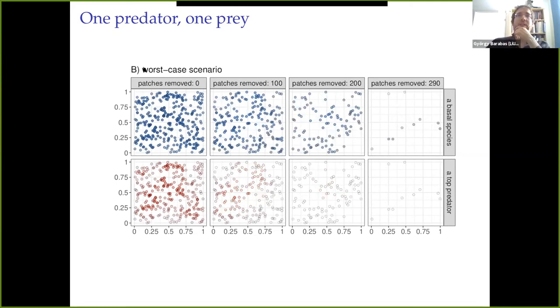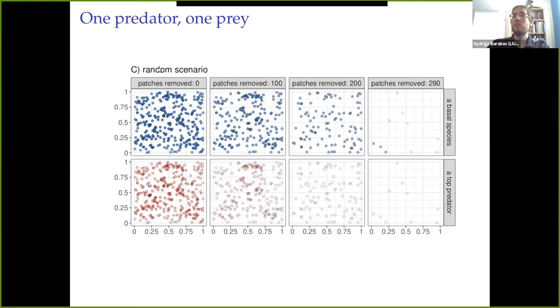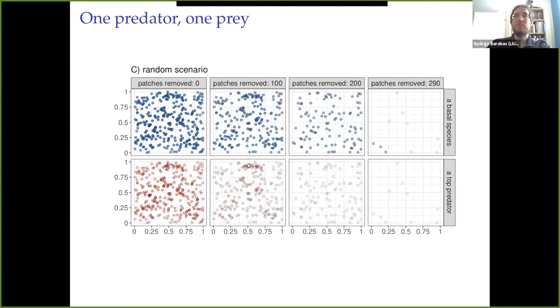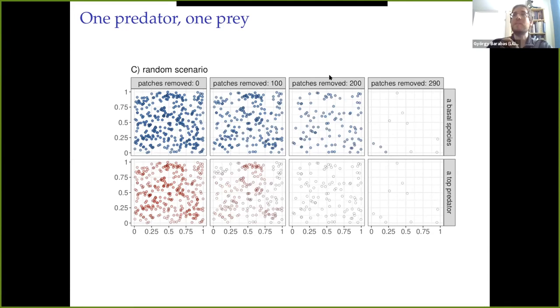What happens, though, if we do the exact same thing, but with the worst case scenario? So repeat exactly what we did, but now remove the most valuable patches first. In that case, after removing the first 100 patches, you see that the predator is almost extinct already. And after removing a few more and getting to 200, it's definitely completely extinct. So the worst case scenario leads to extinction much faster. Now comes the shocker. We've repeated the same thing with a random scenario. So we're removing patches completely at random. Notice that what we get is, from a practical point of view, indistinguishable from what happens in the worst case scenario.